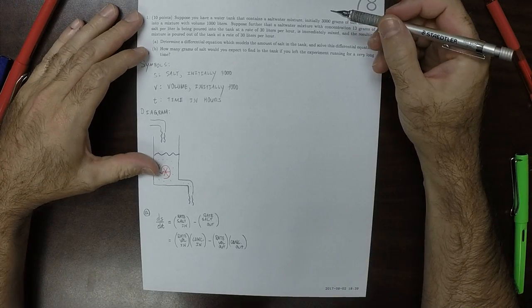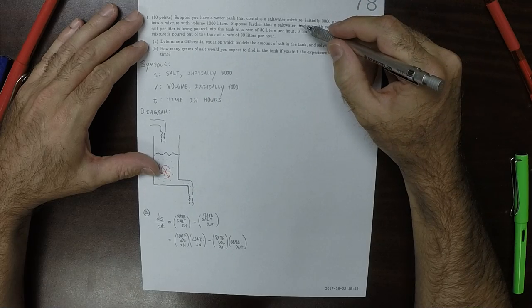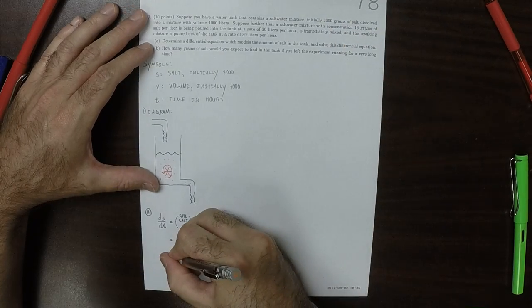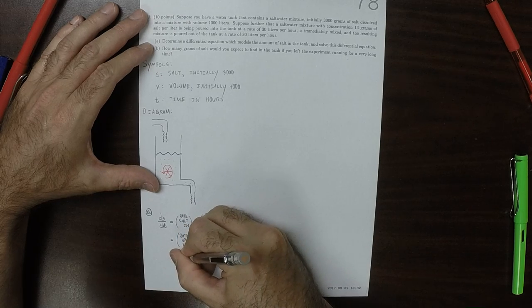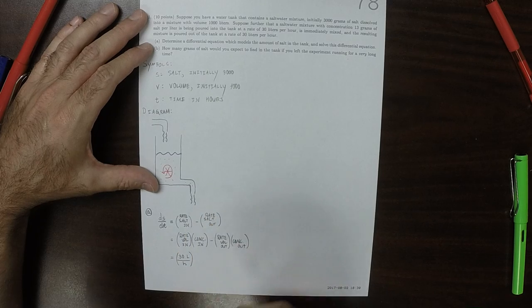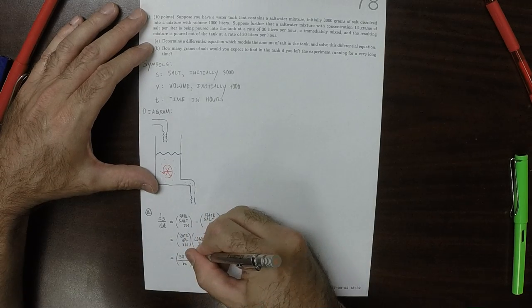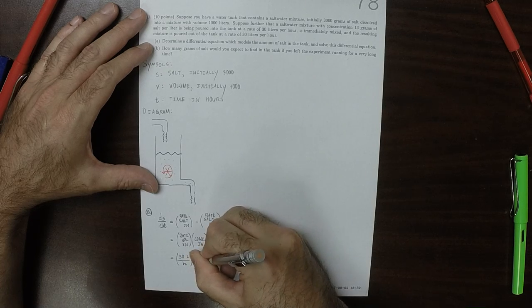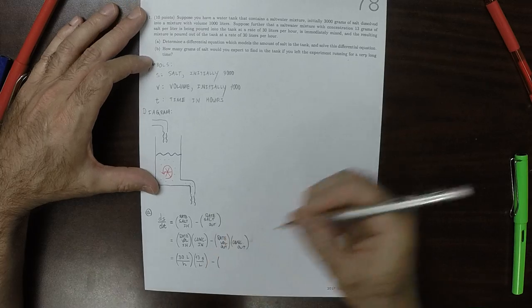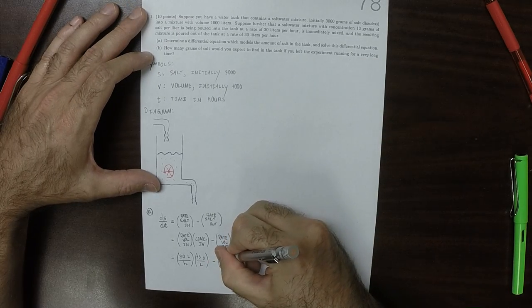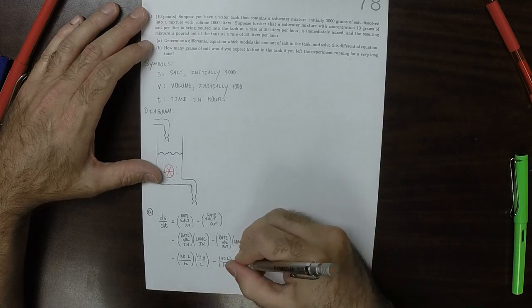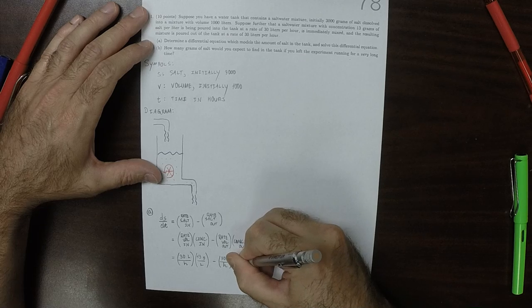So according to the story, 13 grams per liter is being poured into the tank at 30 liters per hour. So then that would be 30 liters per hour. And I'll get rid of the units in a moment. 30 liters per hour, and then this was 13 grams per liter. So it's flowing out is also 30 liters per hour. And then now the concentration going out. Well, this is the part where the differential equation comes in, and then it'll be S over V.